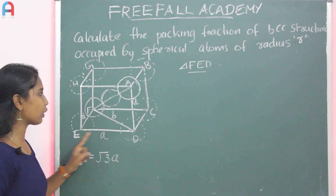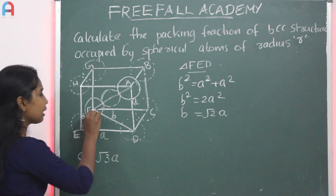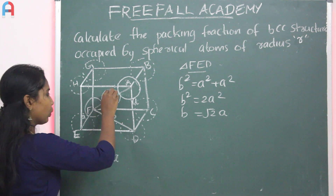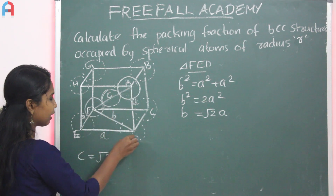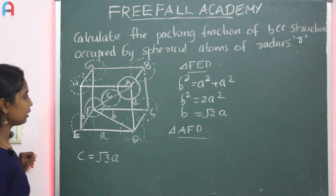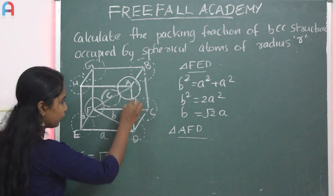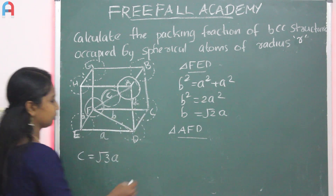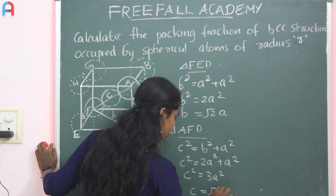B equals root 2 A. Now consider the body diagonal FA, called C. In triangle AFD, C is the hypotenuse. C squared equals B squared plus A squared. Since B squared equals 2A squared, substituting gives C squared equals 3A squared, so C equals root 3 times A.